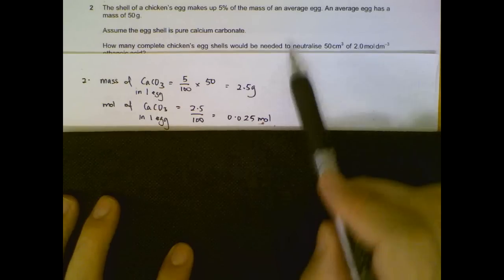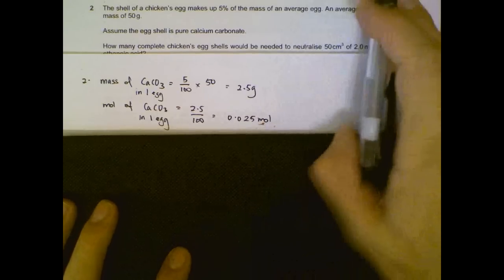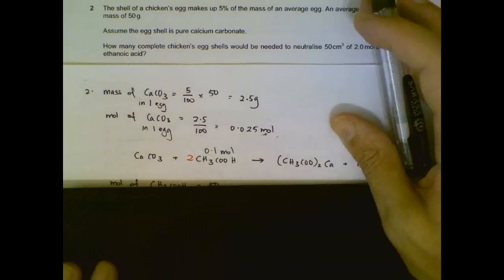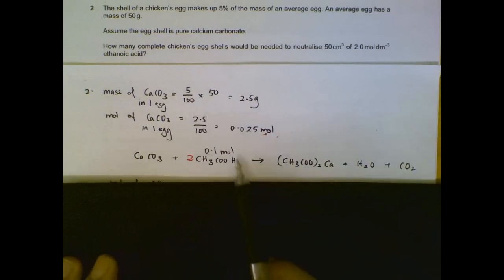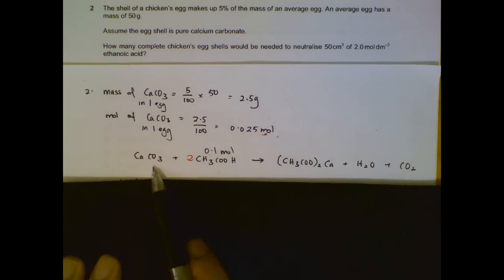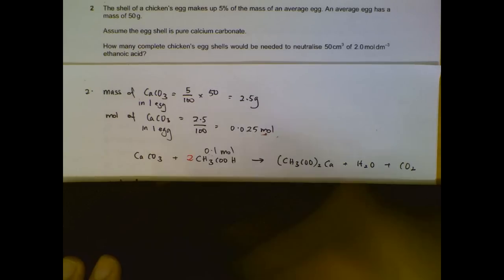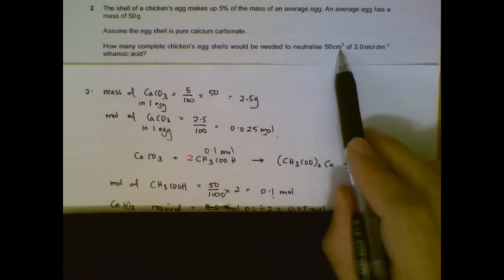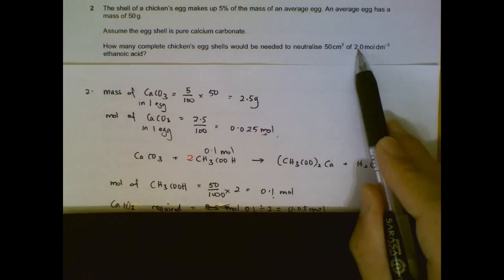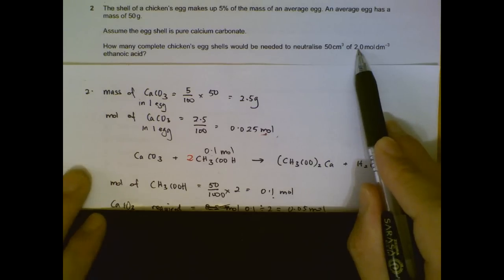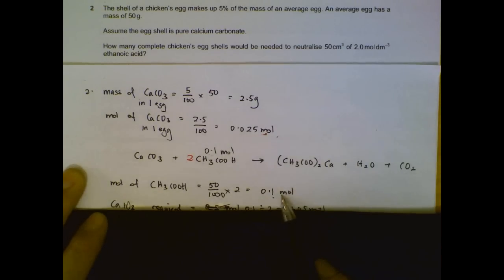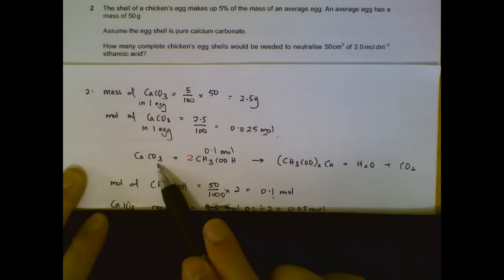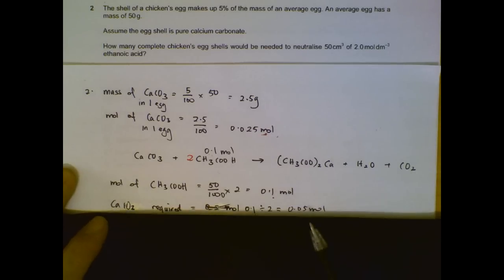We have 0.025 moles of calcium carbonate per egg. Then we form an equation for the reaction of the calcium carbonate and ethanoic acid. This is calcium ethanoate, the salt. We can see that 2 moles of acid will react with 1 mole of calcium carbonate. The moles of acid will be obtained by the volume multiplied by the concentration. So moles of acid, 0.1.